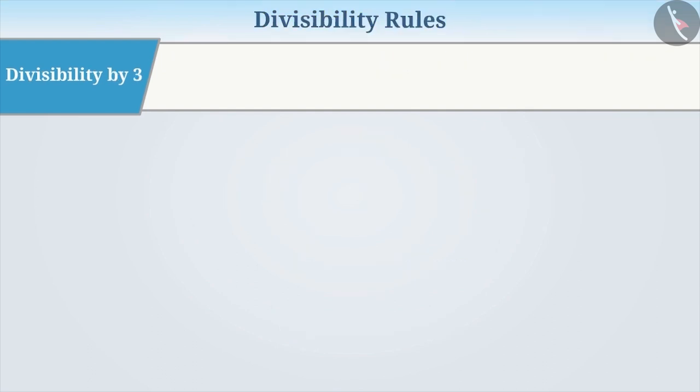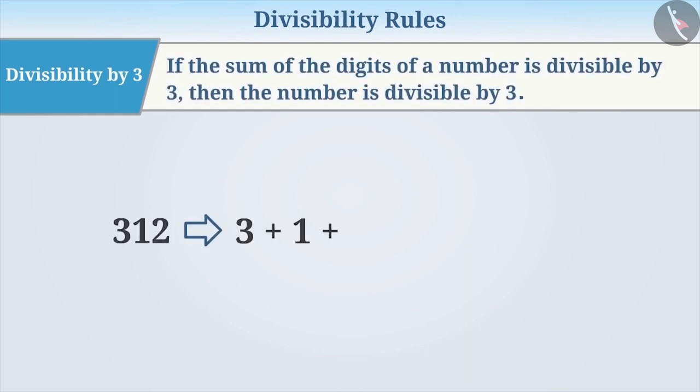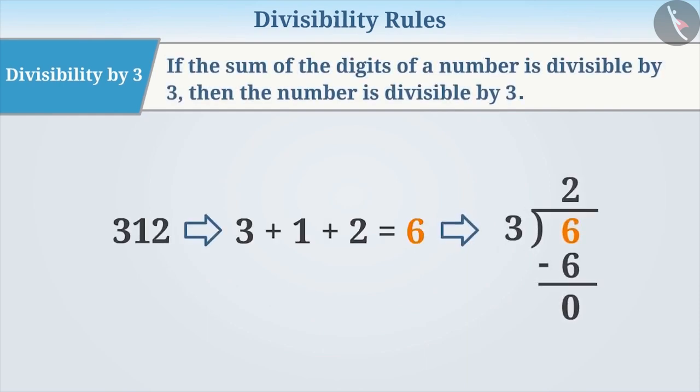Divisibility by 3: If the sum of the digits of a number is divisible by 3, then the number is divisible by 3.